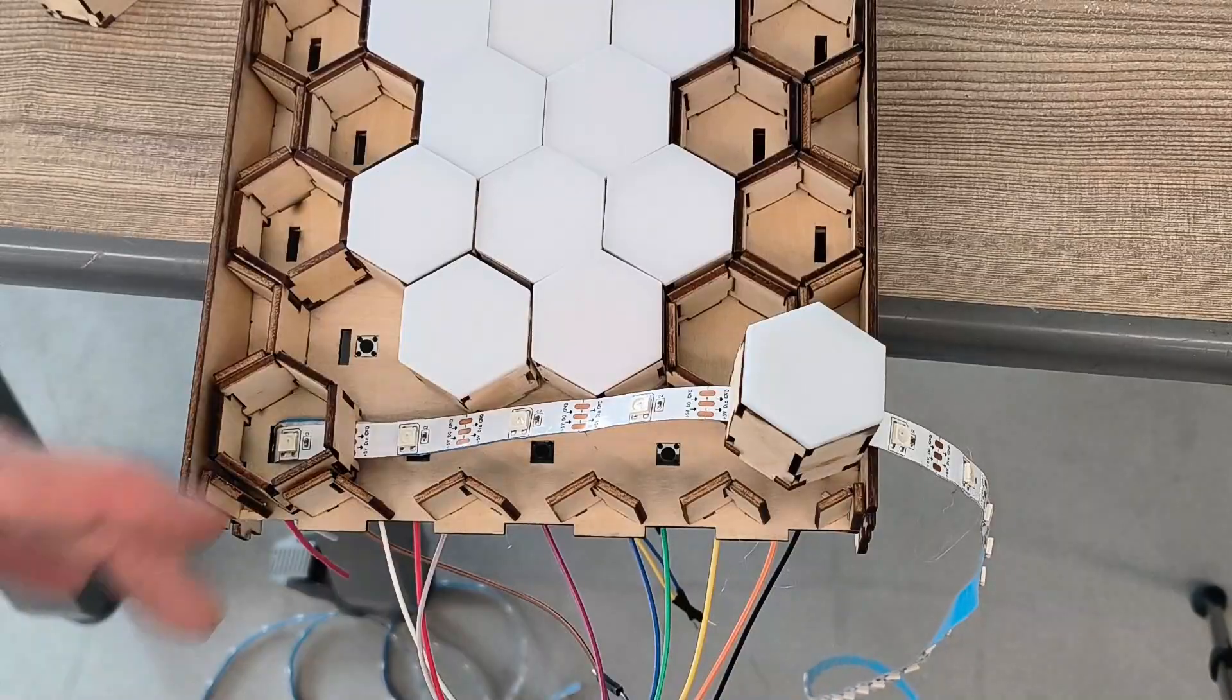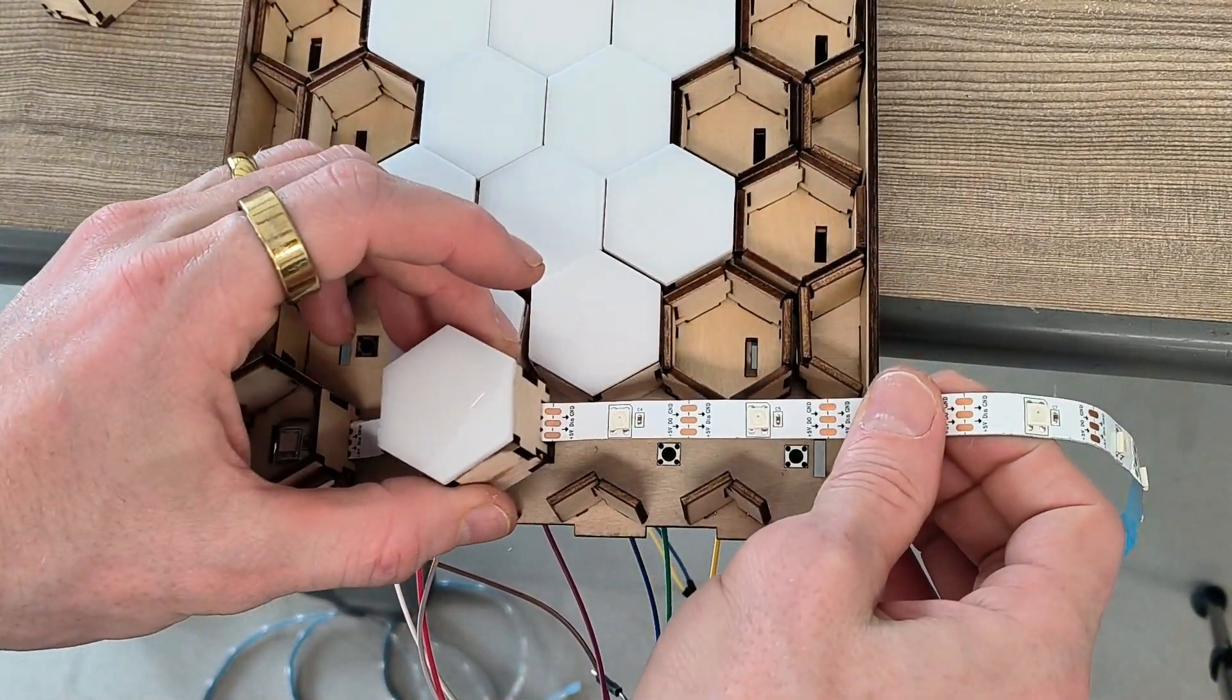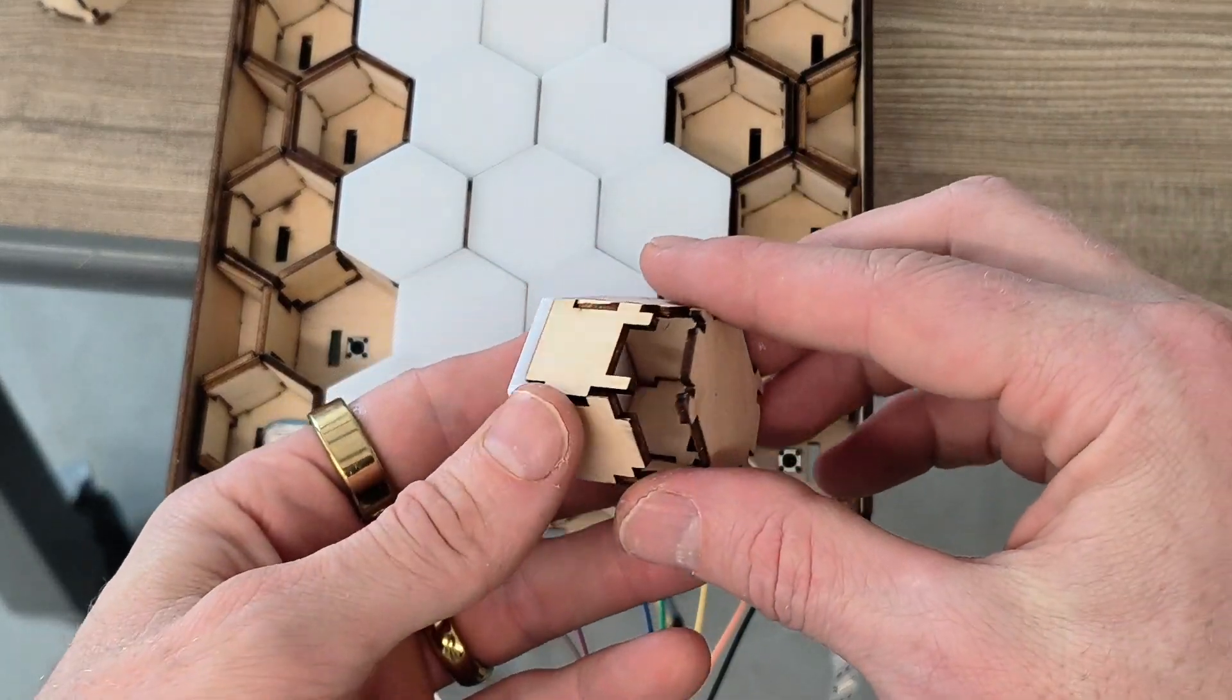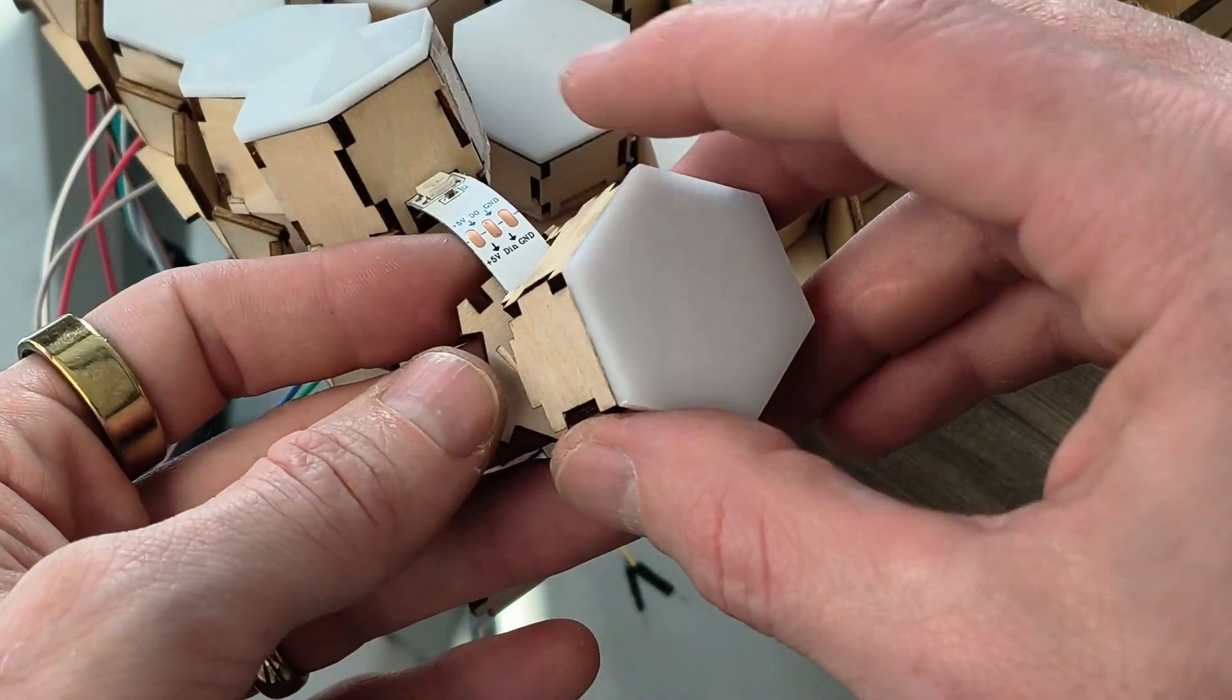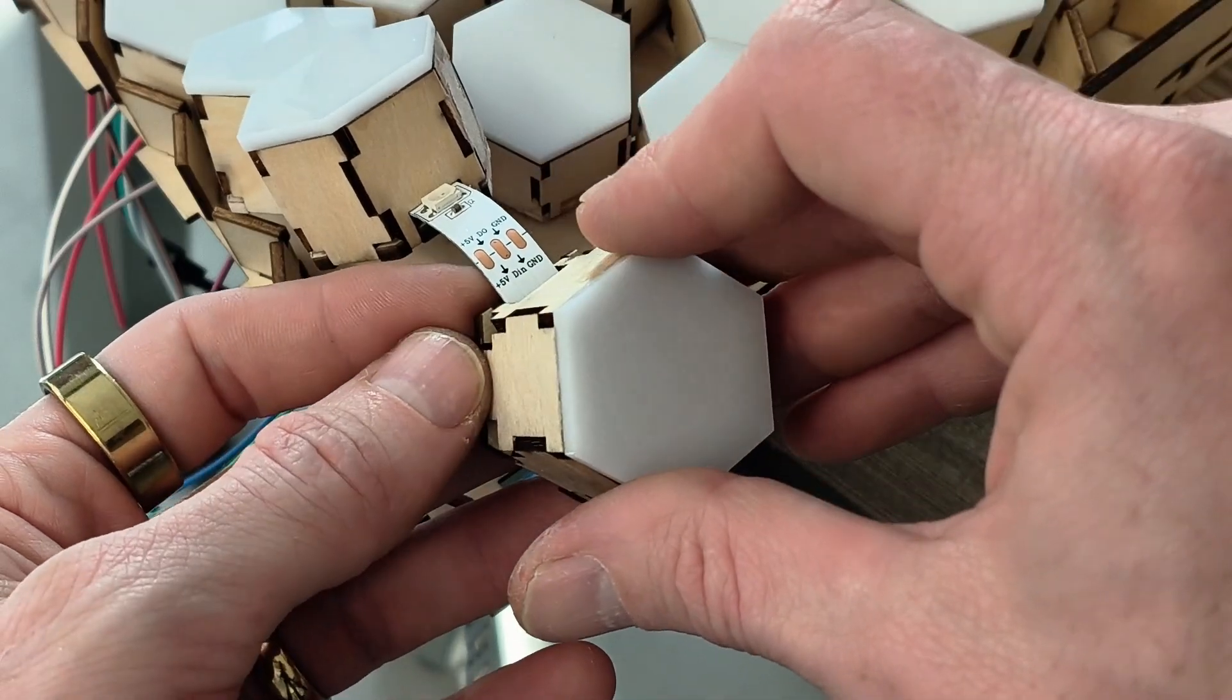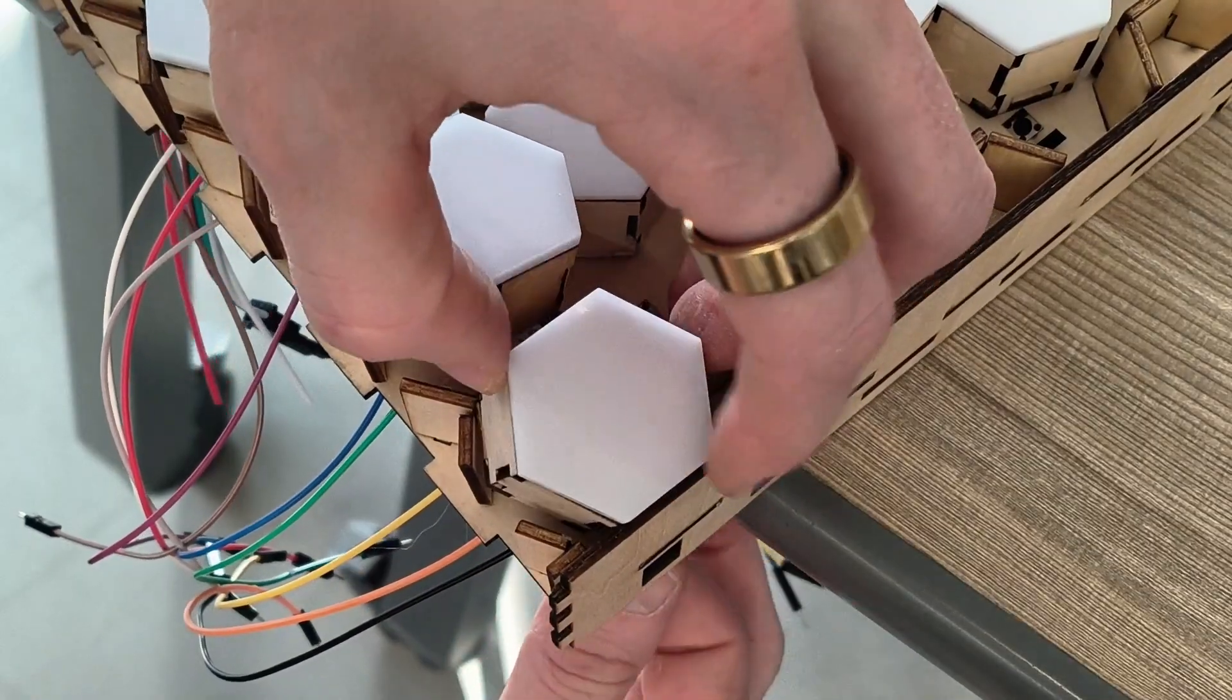The next step is to add the LED strip. And with the LED strip, we'll just feed through the different holes. And I got this, after I got this nifty idea, instead of feeding them through, we could just pop off the bottom and just insert that.